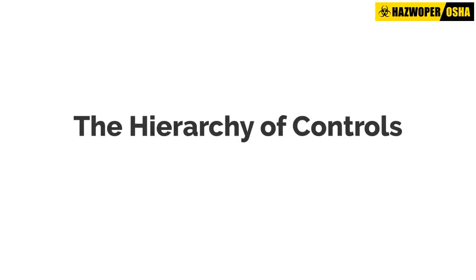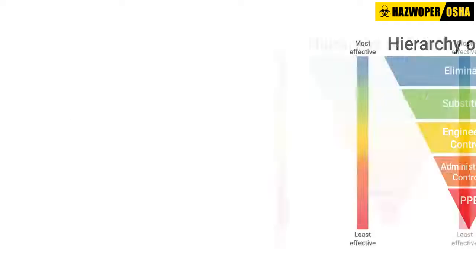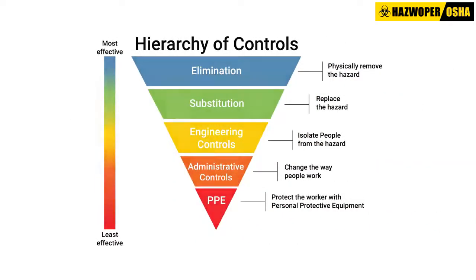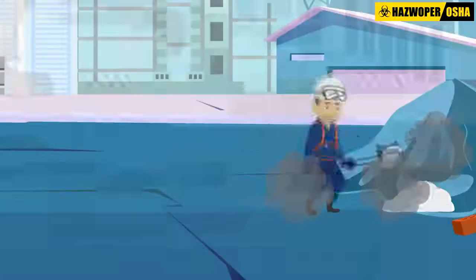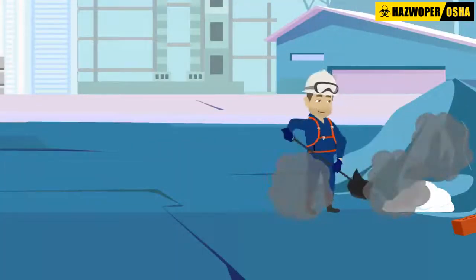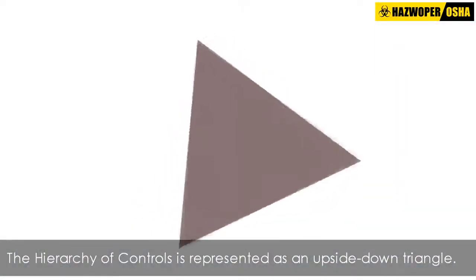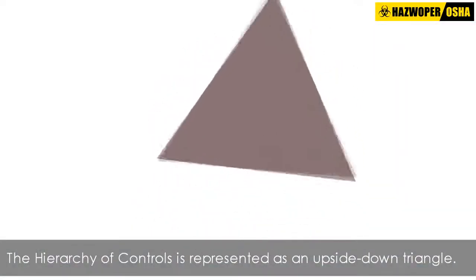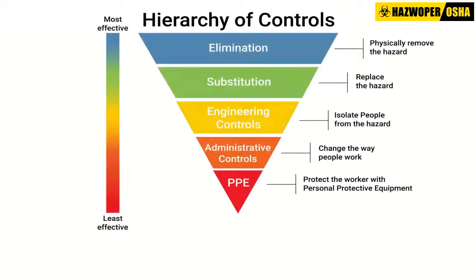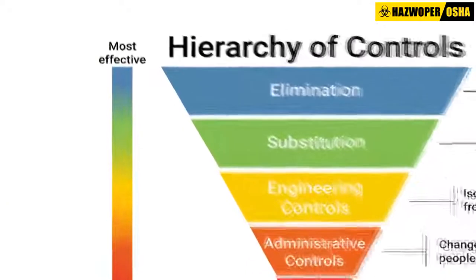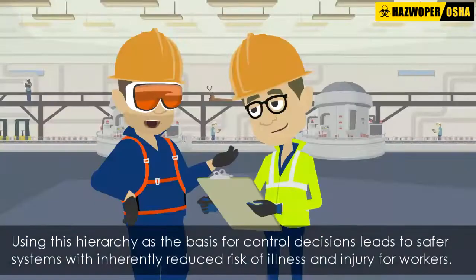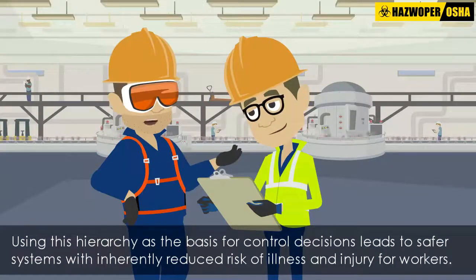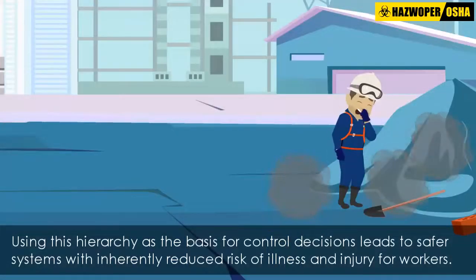The Hierarchy of Controls is a tool developed by industrial hygienists to determine feasible and effective hazard controls in different work environments. It is represented as an upside-down triangle. The control methods listed at the top of the graphic are generally more effective than the methods listed toward the bottom. Using this hierarchy as a basis for control decisions leads to safer systems with inherently reduced risk of illness and injury for workers.